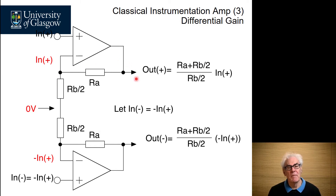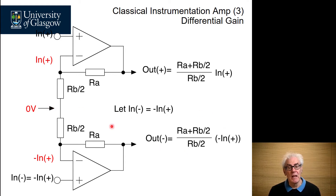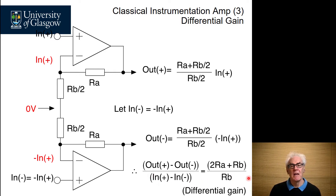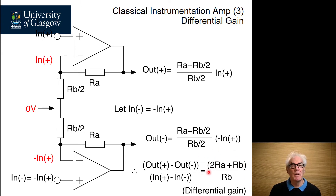We can now apply simple non-inverting amplifier theory, so that the output at this node is the non-inverting gain defined by the resistor ratio times the voltage appearing there, because the midpoint node is at zero. If we calculate the difference voltage appearing between output plus and output minus, and divide it by the difference input voltage at input plus and input minus, we get a differential gain equation for our input buffer stage of (2RA + RB) / RB.